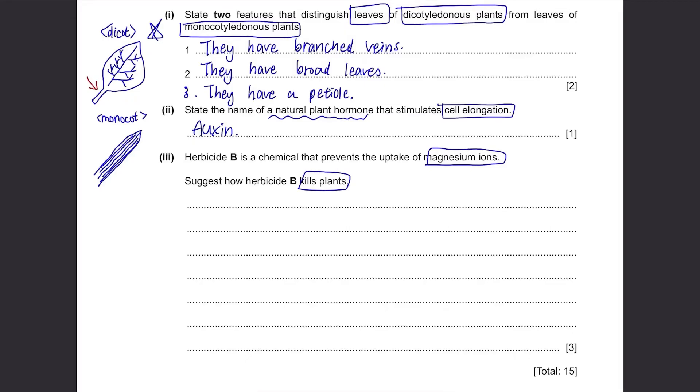We just need to write what happens if plants cannot take magnesium ions. Magnesiums are essential in making chlorophyll. So without magnesium ions, there won't be any chlorophyll.